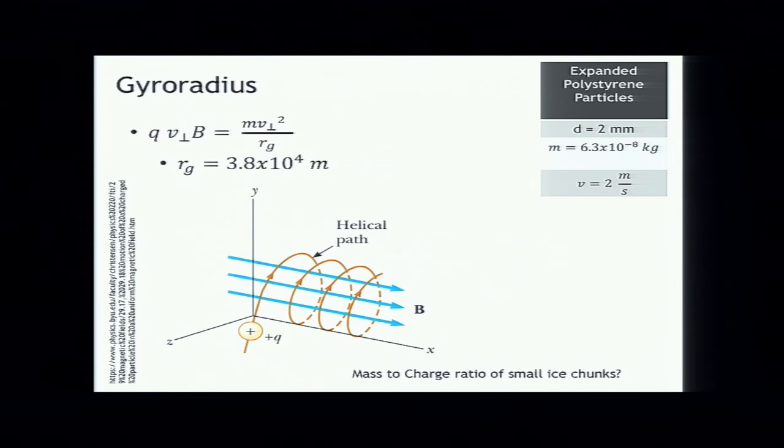Why is this important? If we look at the gyro radius, which is just setting the Lorentz force equal to the centripetal force, we're looking for the radius, and we get an order of magnitude of 10 to the 4 meters. This is a problem because the particles don't have enough time to travel this distance in the short amount of time they're in the field.